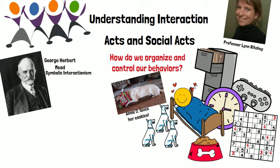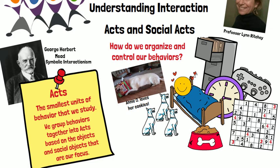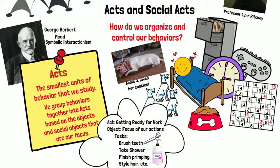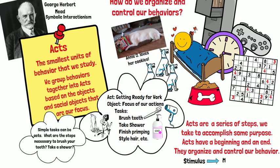Mead suggests that we group our behaviors together into acts, and our acts are based on the objects and social objects that are our focus. For example, getting ready for work is an act, and the objects might include brushing our teeth, taking a shower, and finishing primping and styling our hair. Acts are a series of steps that we take to accomplish some purpose. Acts will have a beginning and an end, and they organize and control our behavior.